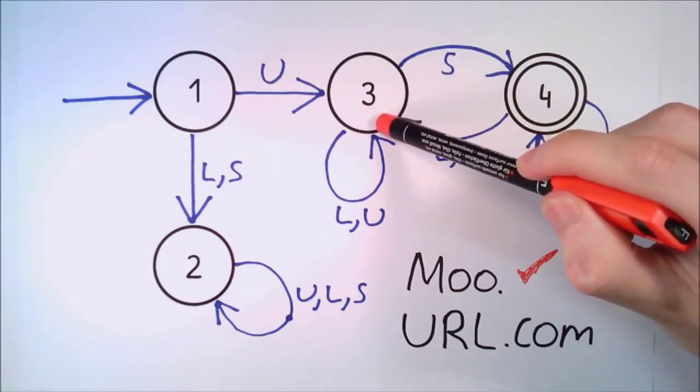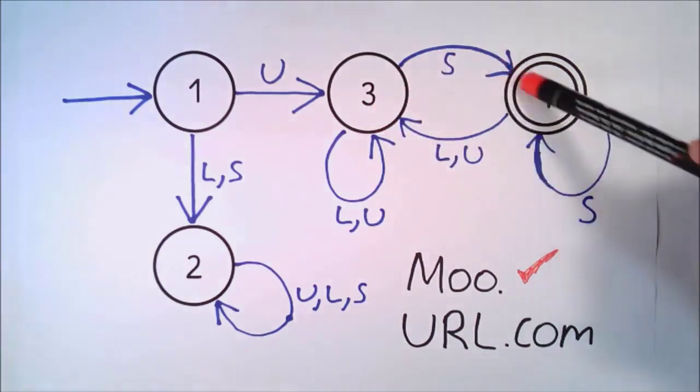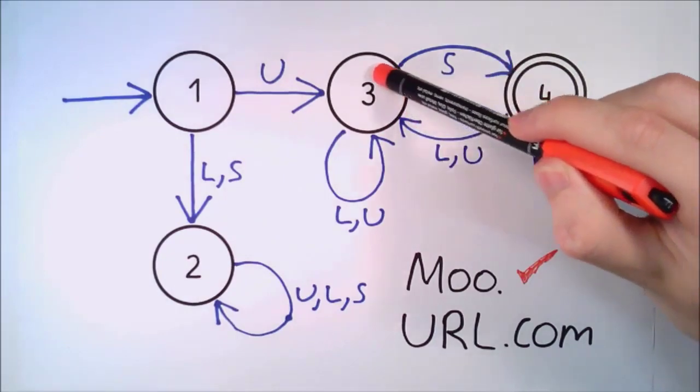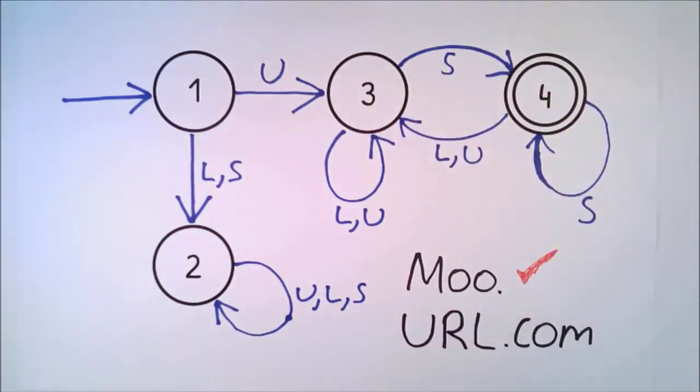This time we are not at an accepting state. So even though we passed through the accepting state, the automaton does not accept URL.com as a valid sentence. However, with the addition of one more full stop, we can make this into a sentence accepted by the automaton.